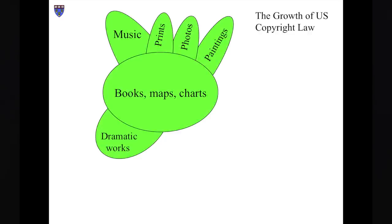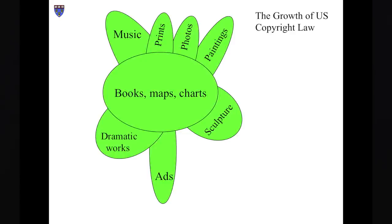Paintings and drawings were added to the set of protected works in 1870, as were statues — meaning three-dimensional works of fine art — a type of work later subsumed into the broader category of works of art and reproductions of works of art. Around the turn of the century, advertisements were accepted into the fold. During the 19th century, courts had generally been hostile to the extension of copyrights to ads on the grounds that they did nothing to 'stimulate original investigation, whether in literature, science, or art, for the betterment of the people.'